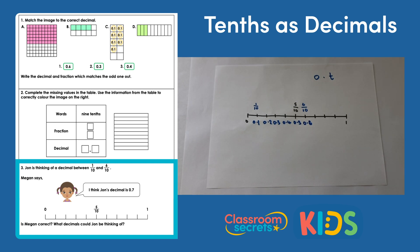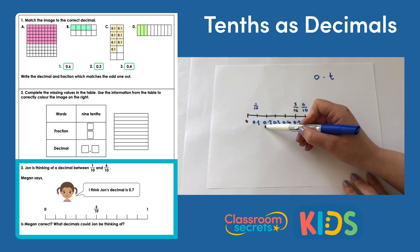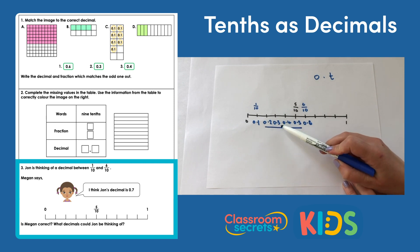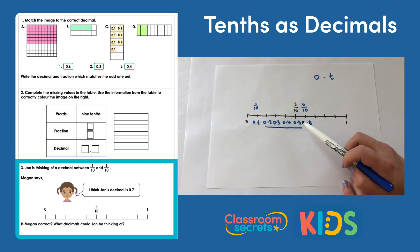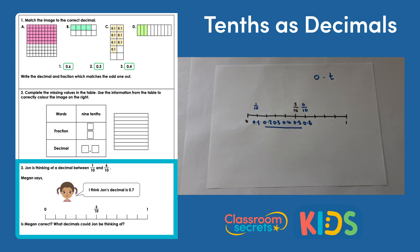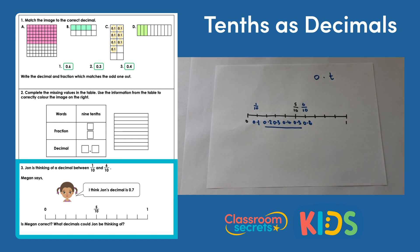Let's check the question again. John is thinking of a decimal between one tenth and six tenths — that means not including those values. So we're looking at the values in the middle: 0.2, 0.3, 0.4, and 0.5. Megan said she thinks John's decimal is 0.7. Now that we've worked this out, Megan cannot be correct because the decimals John could be thinking of are 0.2, 0.3, 0.4, or 0.5.